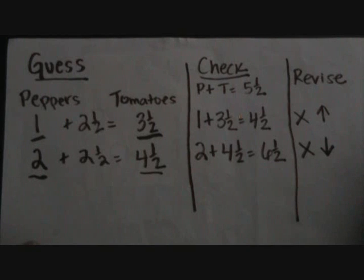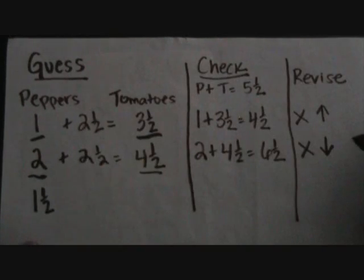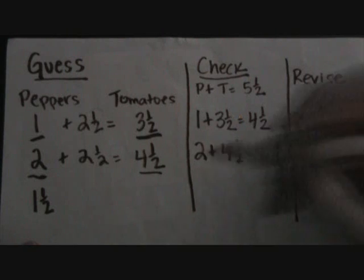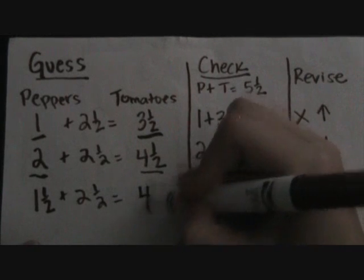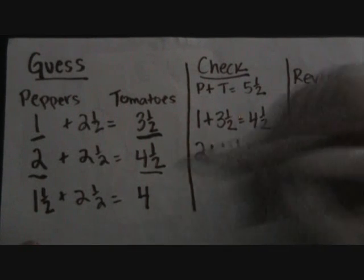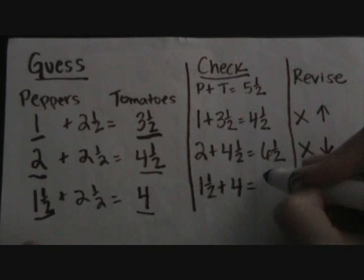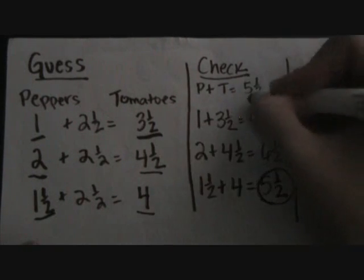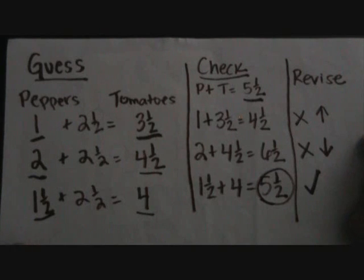The guess should be more than one but less than two, so I am going to try one and a half. If she uses one and a half cups of peppers and two and a half cups more of tomatoes, I add one and a half plus two and a half, which gives me four. To check, I add one and a half plus four — the answer is five and a half. That is the correct amount. Therefore, the answers are that she uses one and a half cups of peppers and four cups of tomatoes.